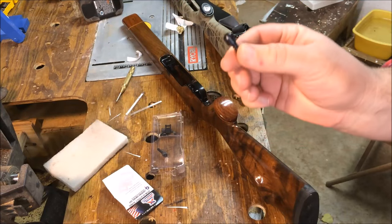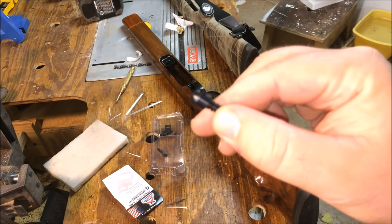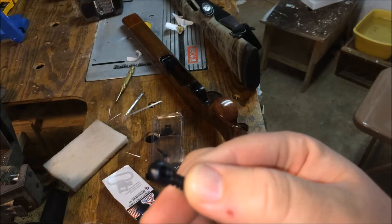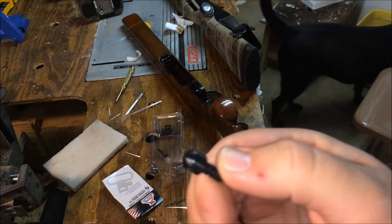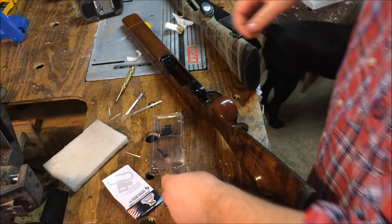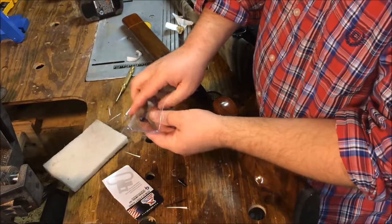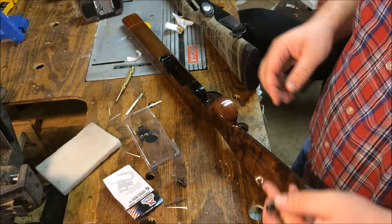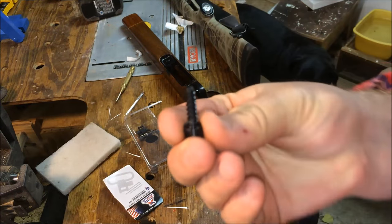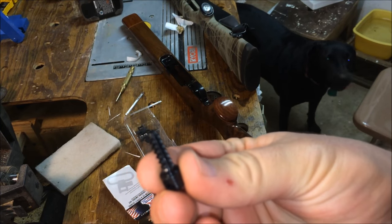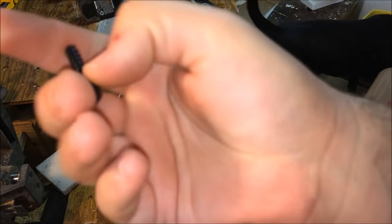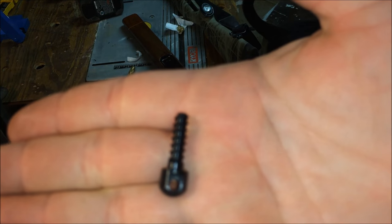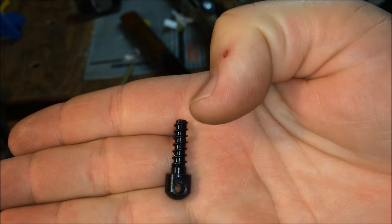Let me show you what it is. This little doodad just allows you to attach a sling, it allows you to attach a bipod if you want to do that. And it's just two different sizes of threads.